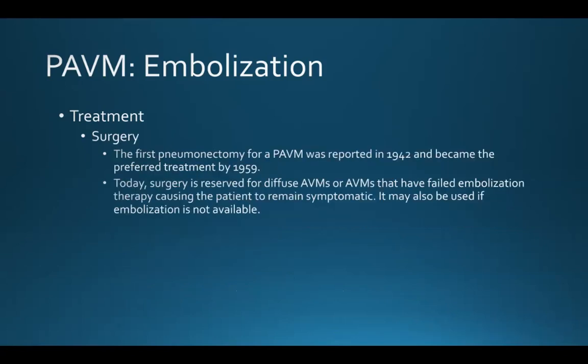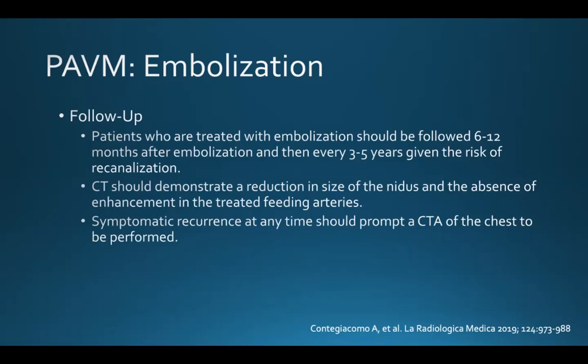Surgery is rarely done today for PAVMs. The first pneumonectomy for a PAVM was reported in 1942 and was the preferred treatment by 1959. Today it's reserved for diffuse AVMs or AVMs that have failed embolization therapy causing a patient to remain symptomatic, or if embolization is not available. Patients who have undergone embolization should be followed 6 to 12 months after the procedure and then every 3 to 5 years given the risk of recanalization. CT should demonstrate a reduction in size of the nidus and absence of enhancement in treated feeding arteries, and symptomatic recurrence should prompt a CTA of the chest.